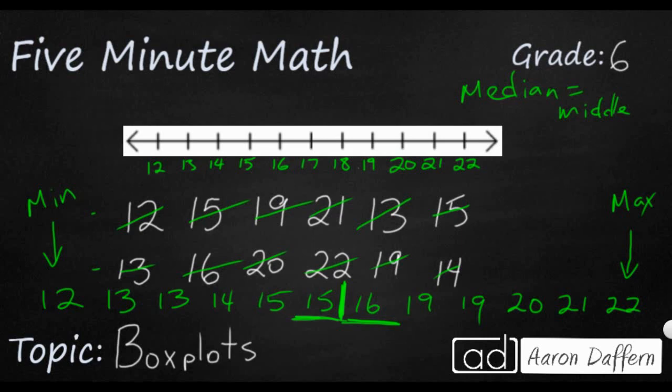Since this is an even data set, that means my middle is actually going to be the average between my 15 and my 16. Sometimes it's going to be a whole number. In this case, my median is actually going to be 15.5. So it is possible for you to have a median that is actually not even a part of your data set. So that is going to be my median.